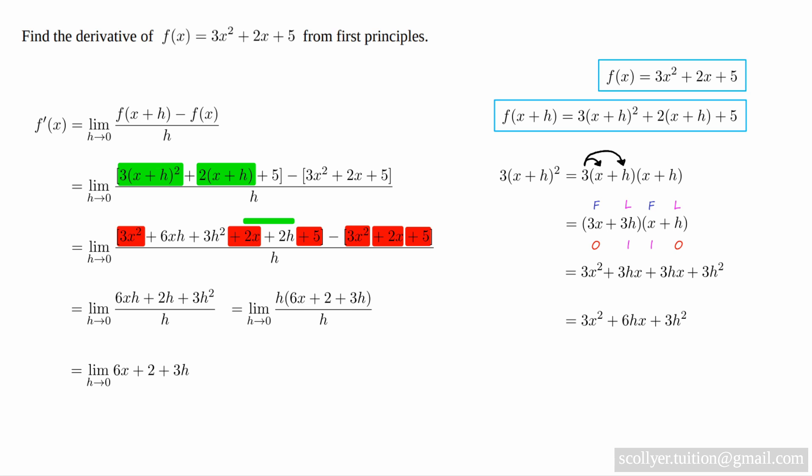We cancel the h's in the numerator and denominator to leave us the limit as h tends to zero of 6x + 2 + 3h, which we split up as the limit as h tends to zero of 6x plus the limit as h tends to zero of 2 plus the limit as h tends to zero of 3h.